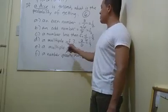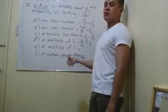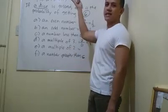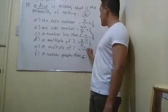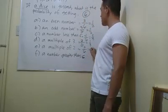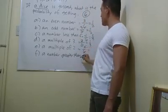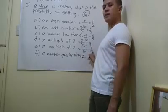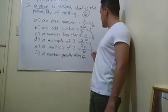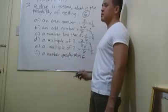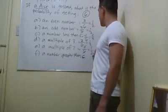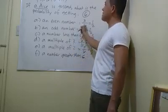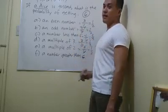A multiple of two — what are the multiples of two? We have two, four, six. That's three over six. We divide by three: three divided by three is one, and six divided by three is two. So one half — same result as the even number.